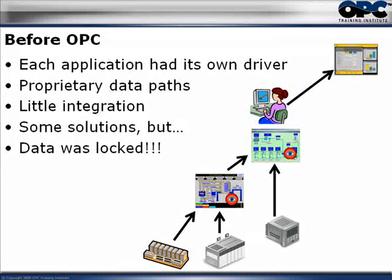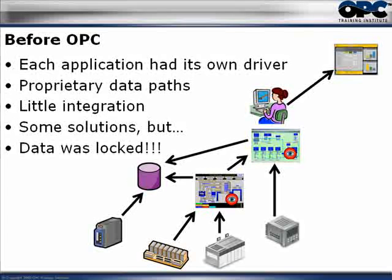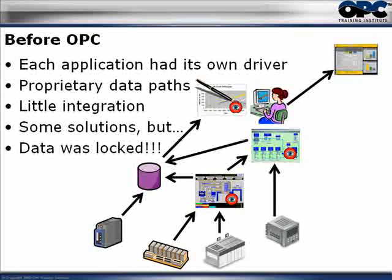After that, they bought a historian and took the data from the HMIs and put it inside the historian. Then they added some analytical tools and put the data from those analyzers directly into the historian. From there, they went to an Enterprise Resource Planning application — like SAP, JD Edwards, or Oracle — and of course they didn't have the driver to go to the CMMS, so again that data had to be transferred manually.